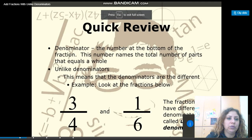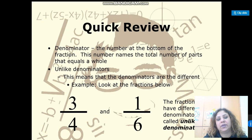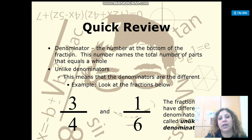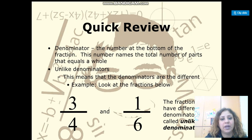Let's make a quick review. What is a denominator? A denominator is the number at the bottom of the fraction and it shows the total number of parts that equals a whole. What is a numerator? It's the top number that shows the part of the whole.